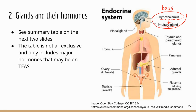There is another small gland also located in the brain — the pineal gland. It secretes melatonin, which regulates the sleep cycle. That's why there are supplements on the market to help you sleep better, and those supplements usually contain melatonin.